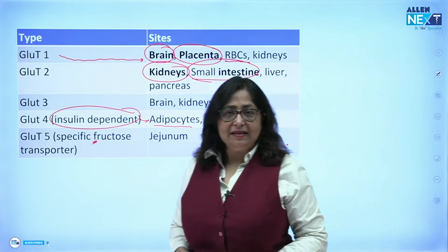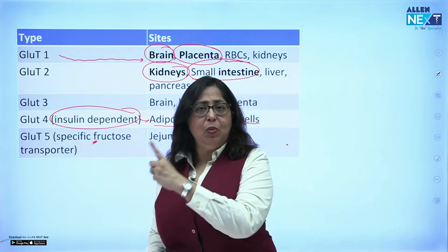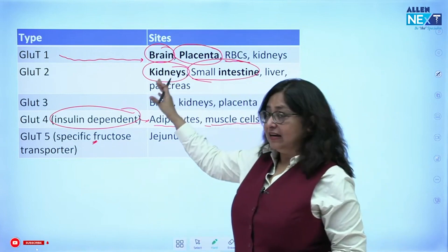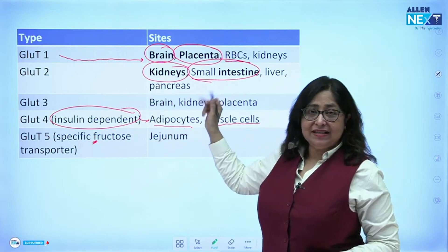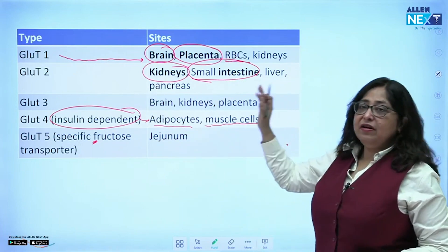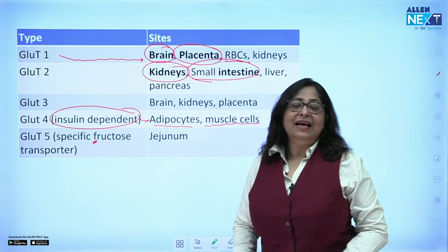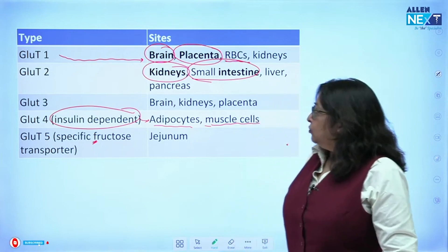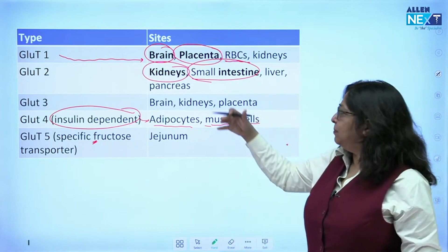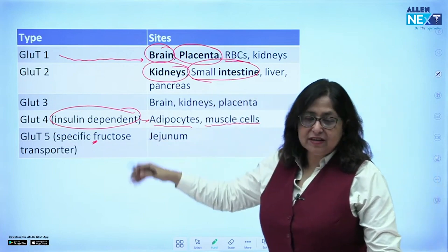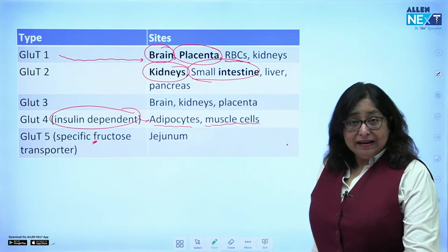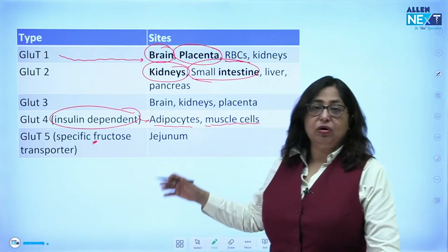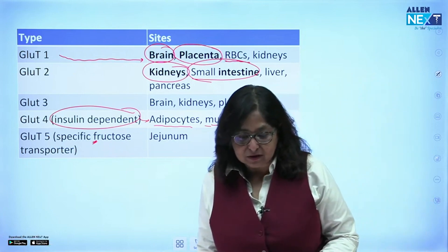To summarize: GLUT-1 is in the brain, placenta, and RBCs. GLUT-2 is in the kidneys, intestines, liver, and pancreas. GLUT-3 has a widespread distribution — brain, kidneys, and placenta. GLUT-4 is the insulin-dependent transporter found in adipocytes and skeletal muscles. GLUT-5 is the fructose-specific transporter.